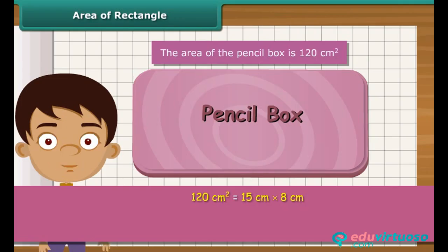So we can generalize that the area of any rectangle is obtained by multiplying its length and breadth.